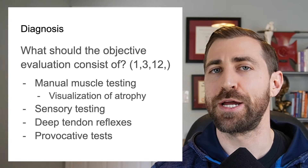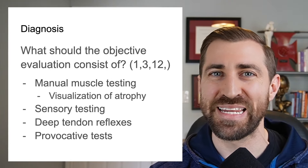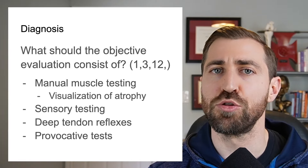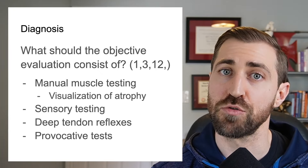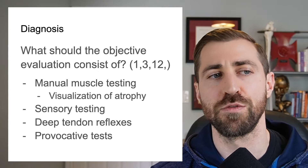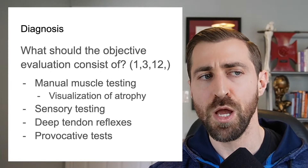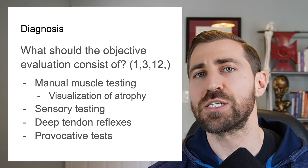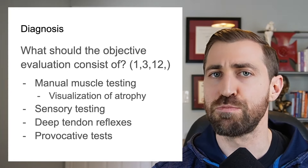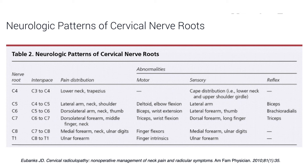For the objective evaluation of patients with suspected cervical radiculopathy, there are four main areas. First, manual muscle testing for myotomal weakness — also look for any visible atrophy in given muscle groups. Second, sensory testing to assess dermatomal changes. Third, deep tendon reflexes using your reflex hammer. Fourth, provocative special tests like the Spurling's test or upper limb neural tension tests.